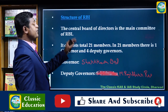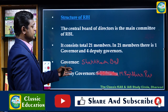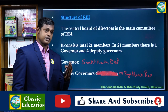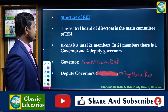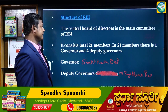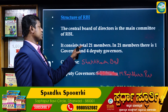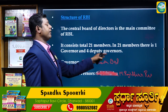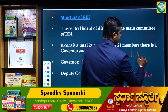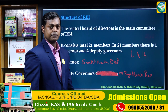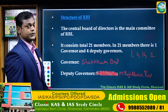Now let's look at the structure of RBI. The structure includes a board of members: one Governor, four Deputy Governors, 14 committee members, and two government officials — totalling 21 board members.